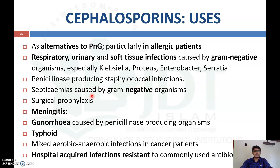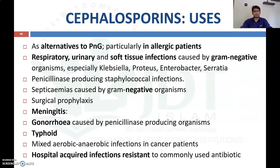Cephalosporins can treat penicillinase-producing Staphylococcus infections and septicemia caused by gram-negative organisms. They are used for surgical prophylaxis to prevent post-operative infection, and for meningitis caused by gram-positive or gram-negative bacteria. Additional uses include gonorrhea caused by penicillinase-producing organisms, typhoid, mixed aerobic and anaerobic infections in cancer patients, and hospital-acquired infections resistant to commonly used antibiotics.